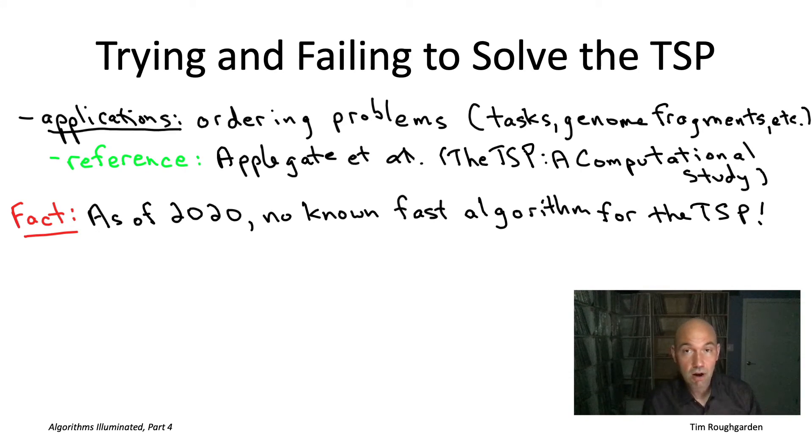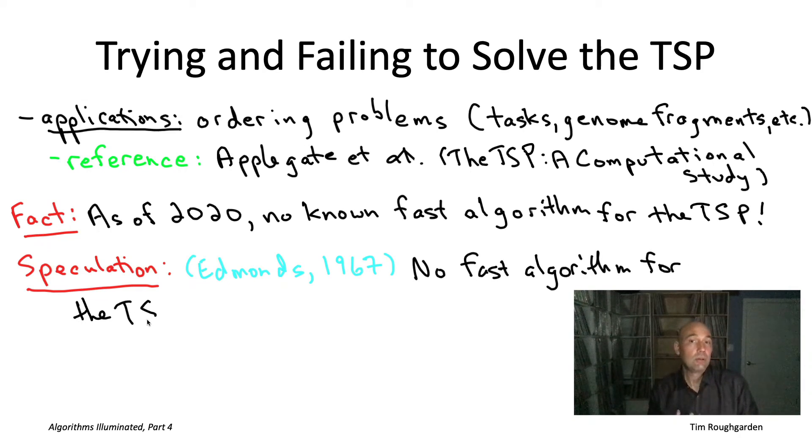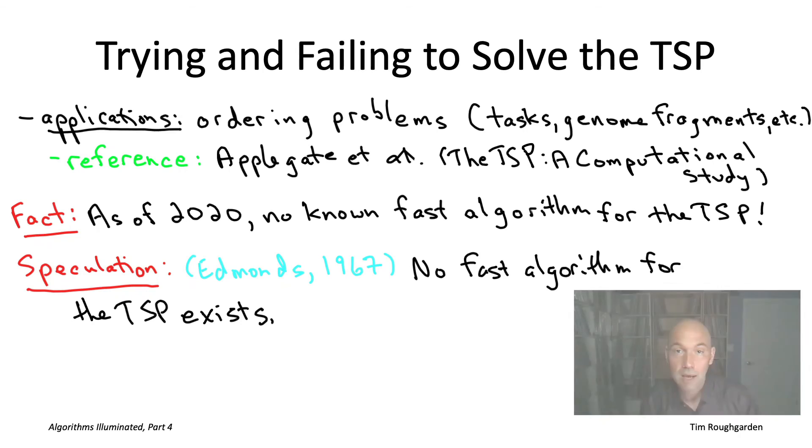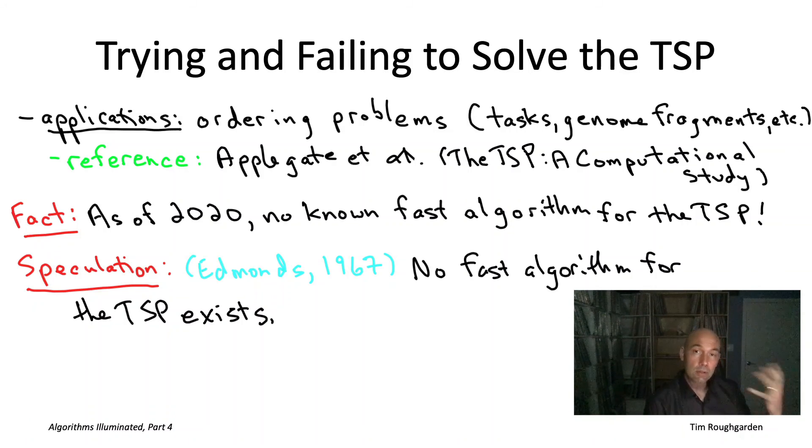Now, there are two possible explanations for this dismal state of the art, the fact that we don't know any algorithm with guaranteed polynomial running time solving the TSP. Explanation number one would be actually there is a fast algorithm out there and we just haven't been smart enough to figure out what it is. It's waiting to be discovered. Possibility number two is that actually the reason we haven't found such an algorithm is because there just literally is no algorithm. That type of algorithm does not exist. So to this day, we don't know which of these two situations is the real one, whether there is an algorithm and we haven't found it or whether there's no algorithm. But most experts believe in the second of those explanations. That's equivalent to what's known as the P not equal to NP conjecture. And actually all the way back to 1967, which is actually before the P versus NP question was formally identified, Jack Edmonds in a famous 1967 paper called optimum branchings conjectured that in fact there is no good algorithm for the TSP, whereby good Edmonds meant with running time scaling like a polynomial function in the input size.